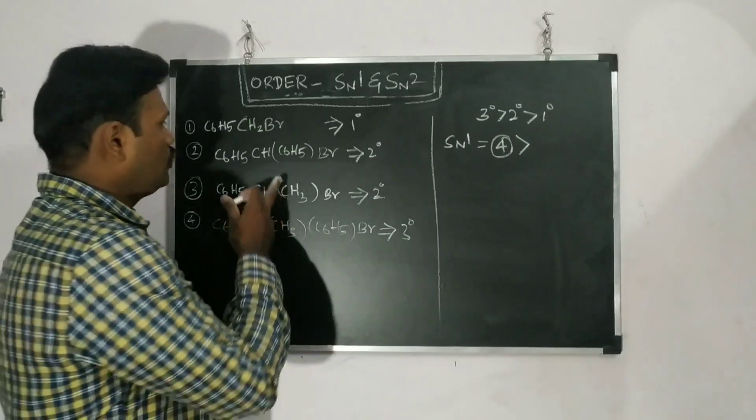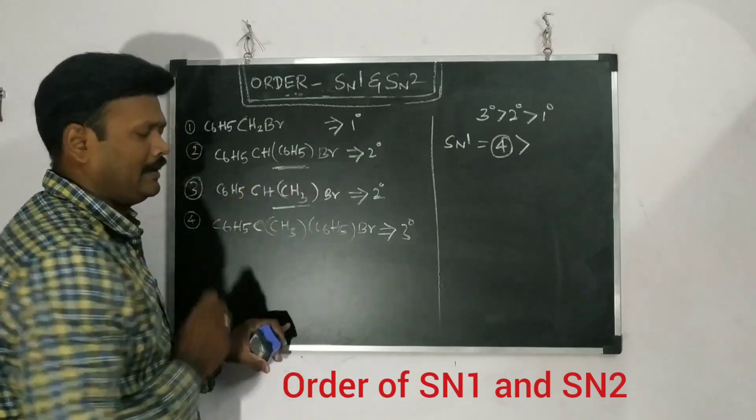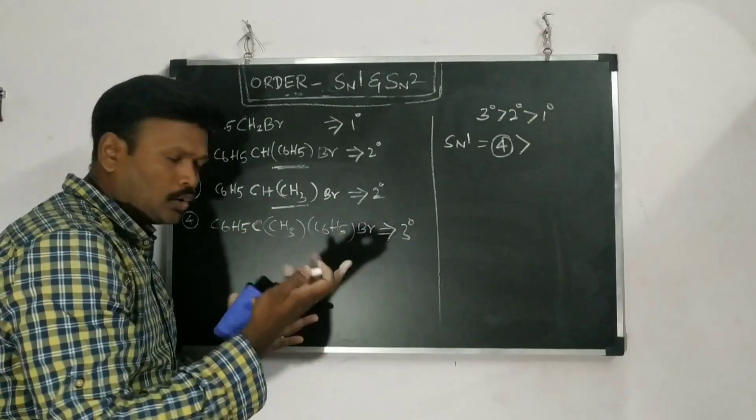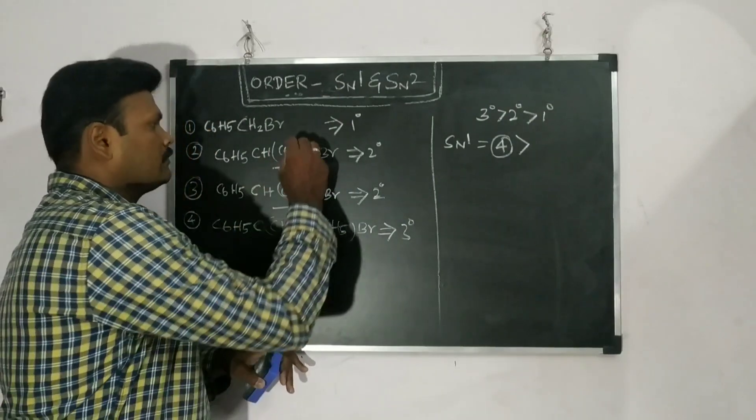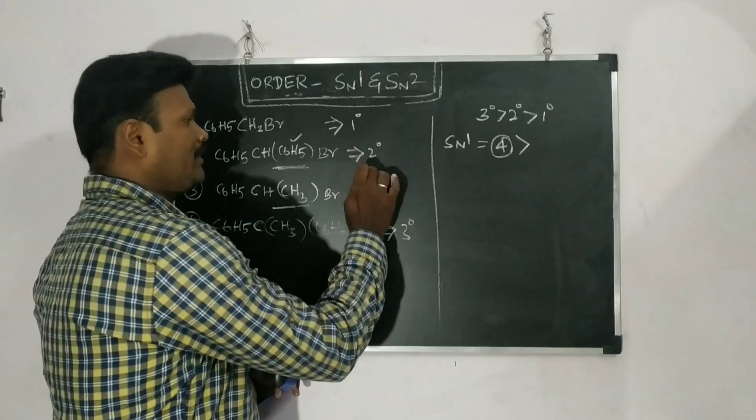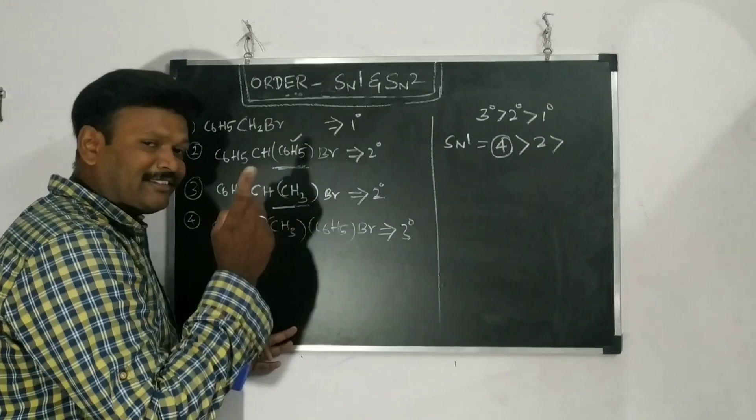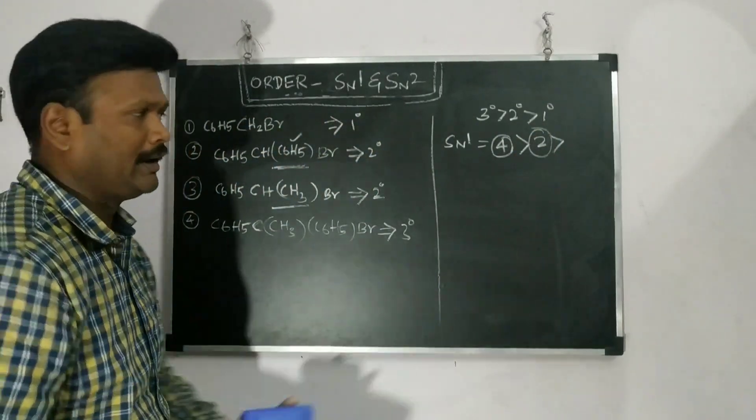So which one? We saw about that. Here only CH3 group is there. Here C6H5 is there. Which one is bulky group? When compared to these two things, both are bulky groups. So compared to these two things, which will be bulky? So this will be highly bulky. So this will be undergoing SN1 very faster because of steric hindrance. More steric hindrance more favors the SN1 reaction.